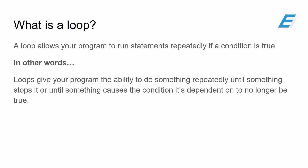So what is a loop? A loop allows your program to run statements repeatedly if a condition is true. In other words, loops give your program the ability to do something repeatedly until something stops it or until something causes the condition that it's dependent on to no longer be true.